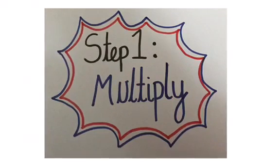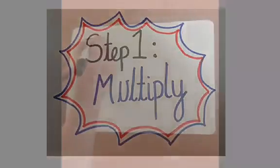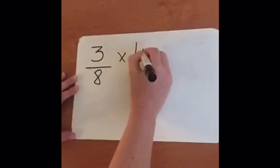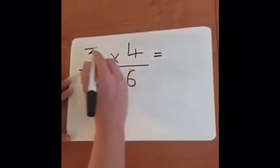Okay guys, so Miss Sheldon is going to first show you step one: multiplying the fraction. She's going to start by writing the calculation out, which is 3/8 times 4/6.